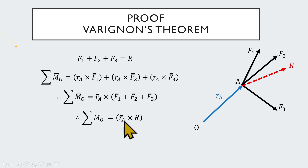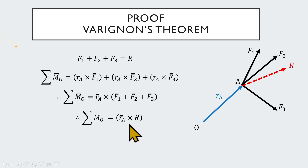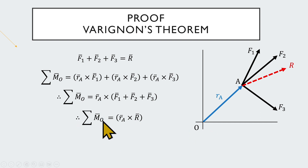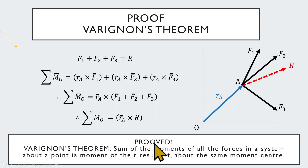Therefore we can write: the sum of moments of all forces equals r̄ cross R̄. This bracket is nothing but the moment of the resultant about point O. So it proves that the sum of moments of all forces in the system is equal to the moment of the resultant — that is, the sum of the moments of all forces about a point equals the moment of the resultant about the same moment center.